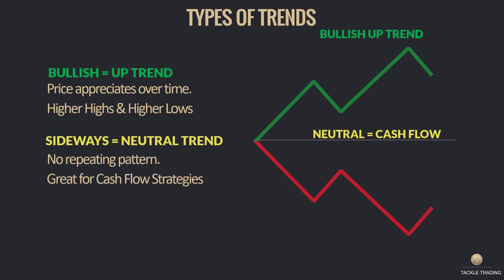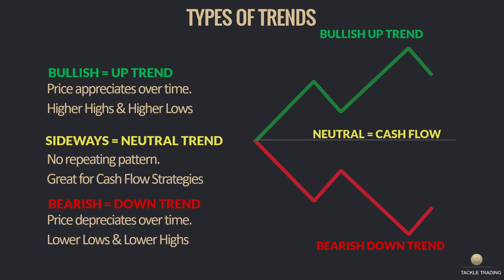The second type of pattern is what we call a sideways neutral pattern, where there is no repeating pattern. We don't trade within this pattern. It's great for cash flow systems such as iron condors, credit spreads, naked puts, and covered calls.